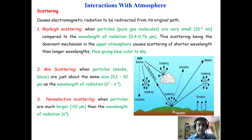Welcome back. We will talk about interactions of the electromagnetic spectrum with the atmosphere. All the energy that comes from the Sun has to pass through the atmosphere, where certain processes take place. The electromagnetic spectrum may be transmitted through the atmosphere, absorbed by particles and molecules, or scattered by different means. Scattering is an important phenomenon where the electromagnetic spectrum is redirected from its original path.